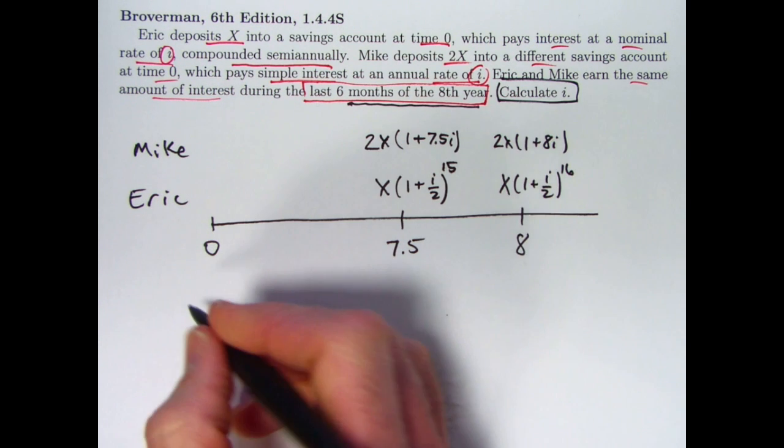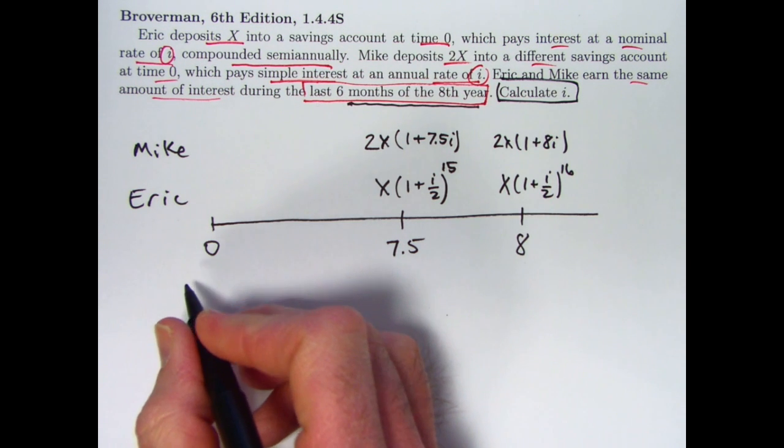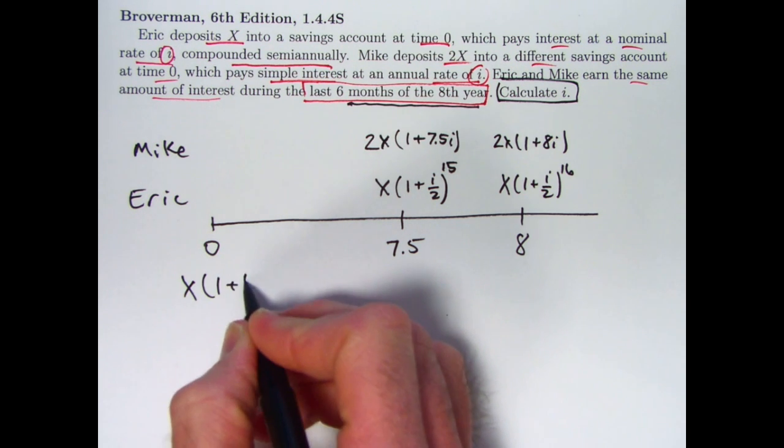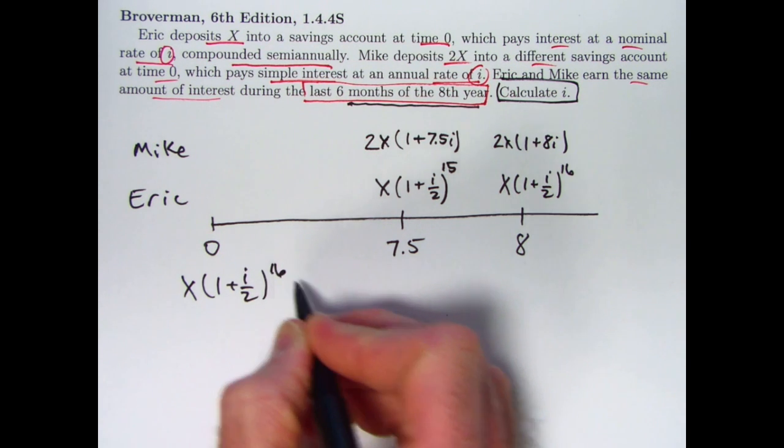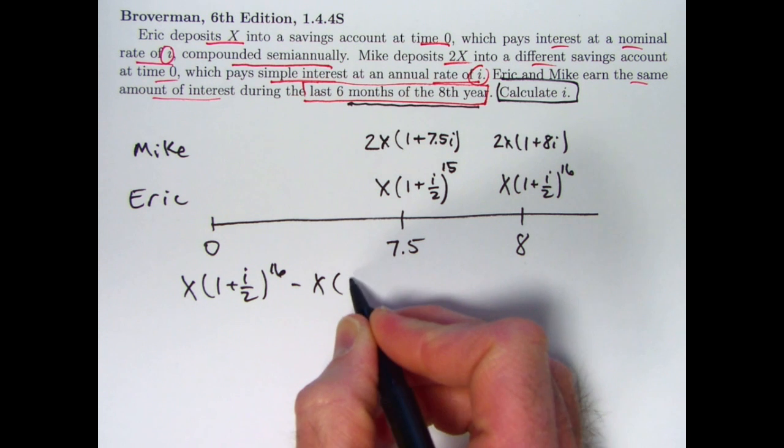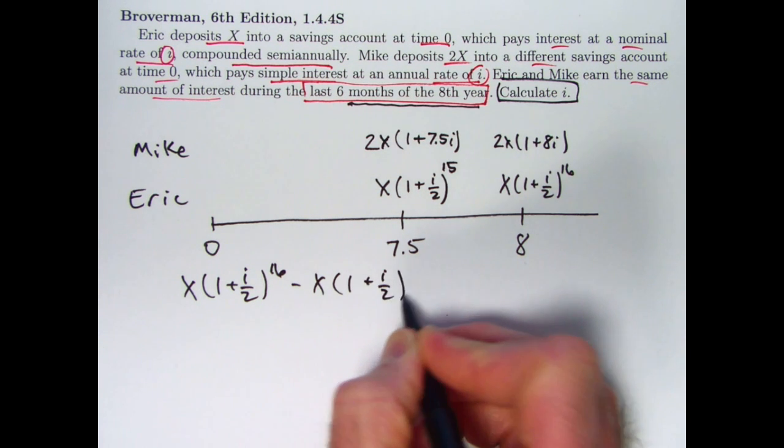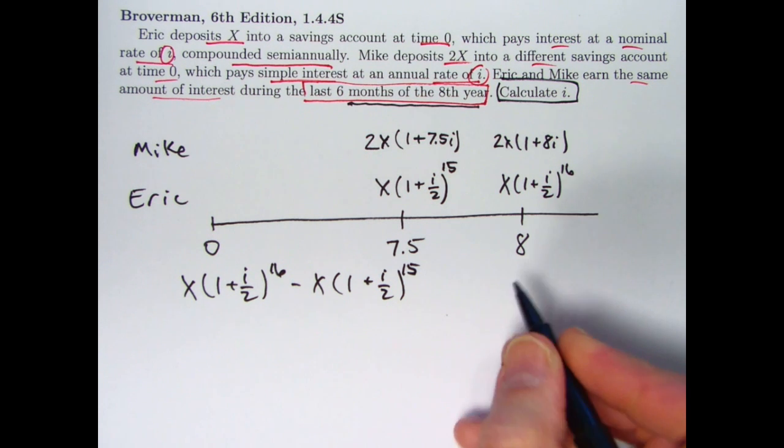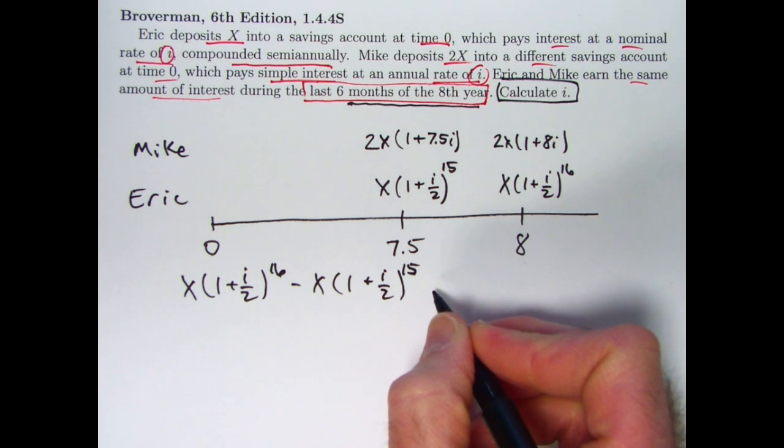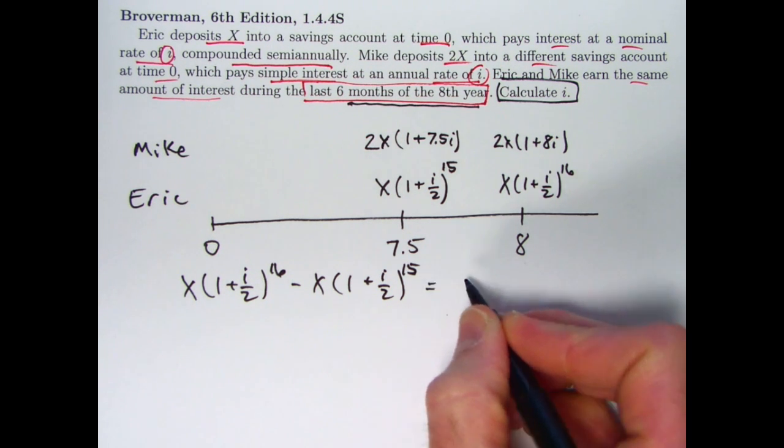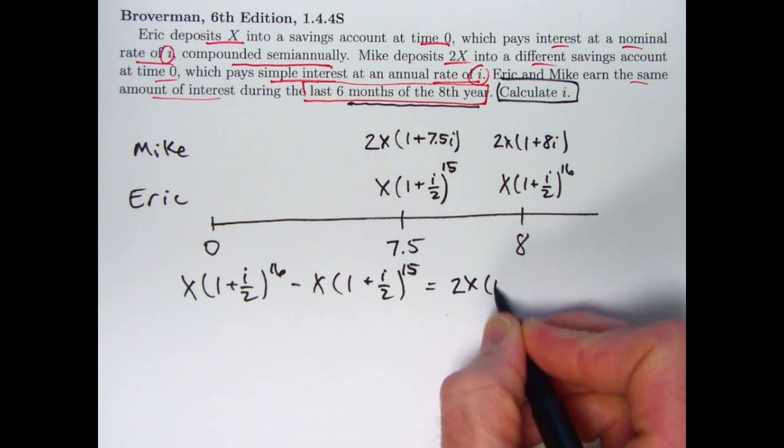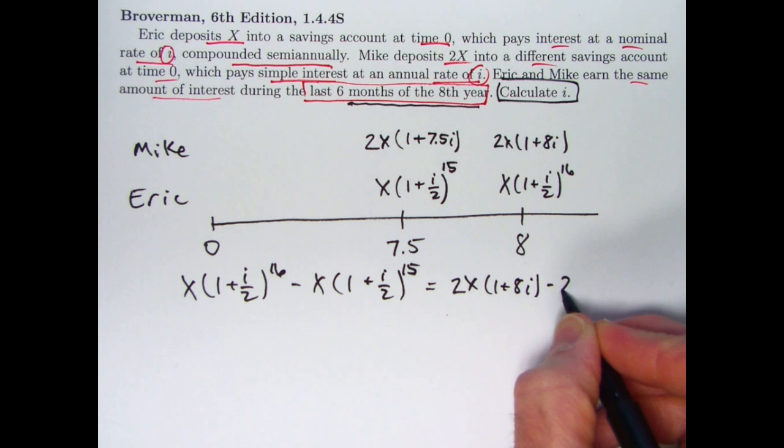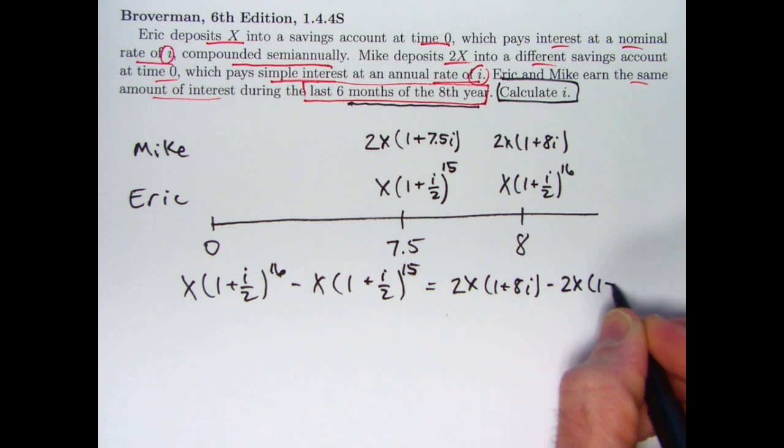The difference, this thing minus that thing, is going to be Mike's amount of interest during the last 6 months of the 8th year. And these need to be equal to each other. This difference is Eric's amount of interest earned in the last 6 months of the 8th year. And this difference is the amount of interest that Mike earns during the last 6 months of the 8th year.